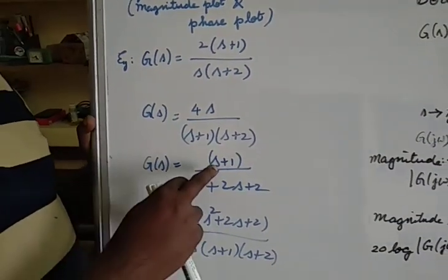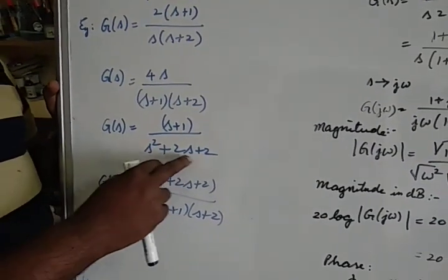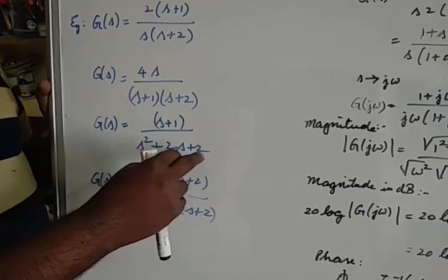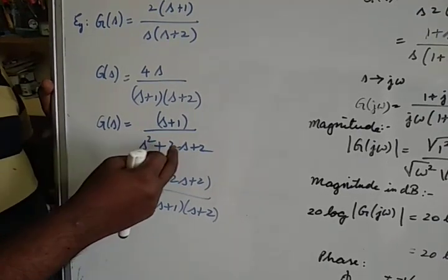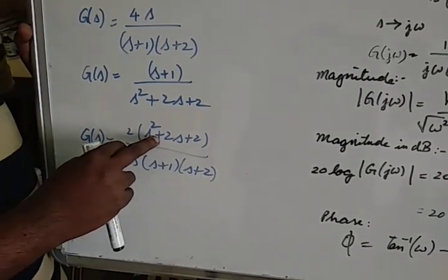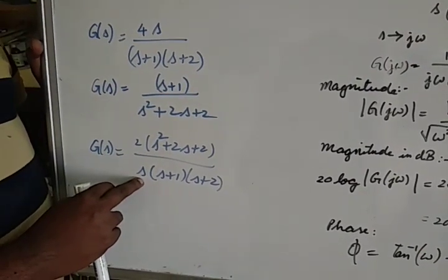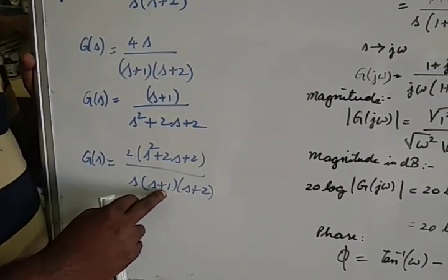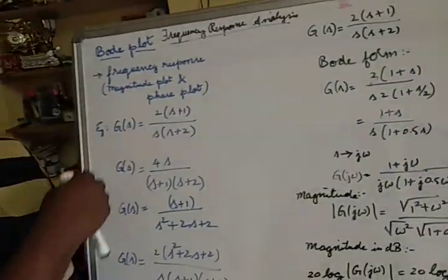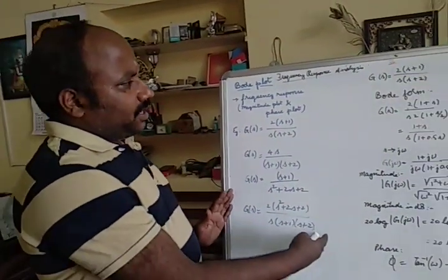In another example, we have a zero at minus 1 and a complex pole. If you solve (s²+2), we will be getting a complex pole. We also have a complex zero, a pole at the origin, a pole at minus 1, and a pole at minus 2. So these are the things we have here.